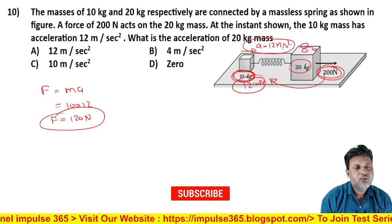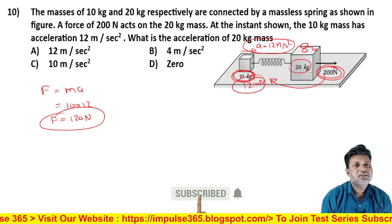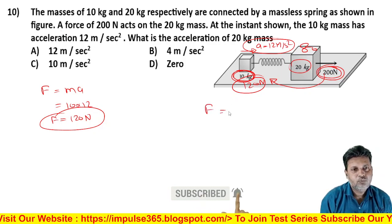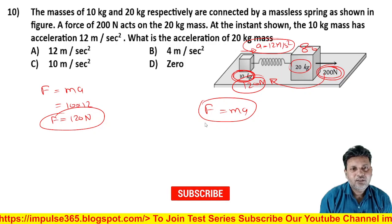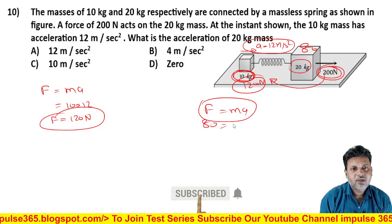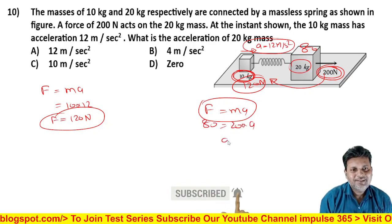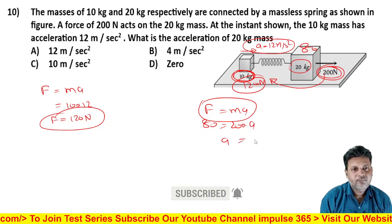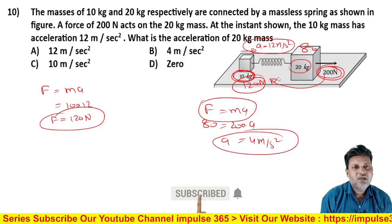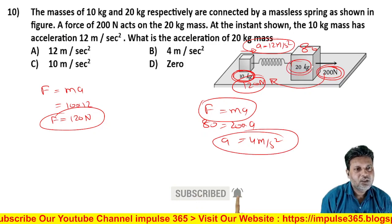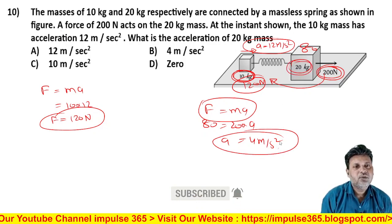Ab is 80 newton se 20 kilogram wala mass kitna acceleration se move karega? To F = ma lagaya. 80 newton ka force 20 kilogram wale mass ko mila, to acceleration kitna ho jayega is case me 4 meter per second square. To jo bacha hua force 80 newton usse 20 kilogram wala mass 4 meter per second square se accelerate karega.